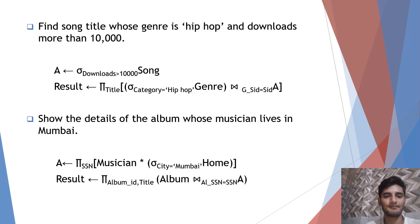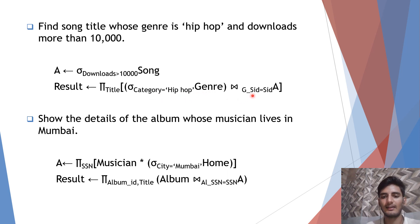The next query is: find the song title whose genre is hip hop and downloads more than 10,000. In A, we will be storing all songs whose downloads is greater than 10,000. Then from the genre table we will be selecting all genres whose category is hip hop, and joining it with A wherever gsid is equal to sid. From there we project title, which will be stored in result.